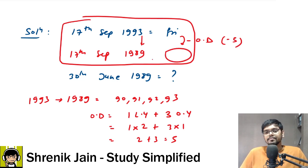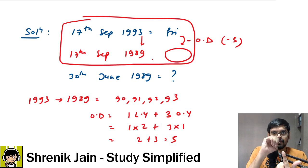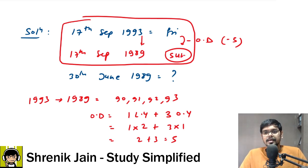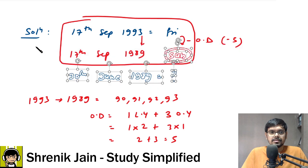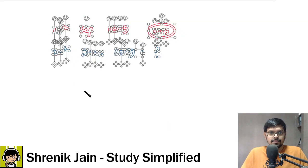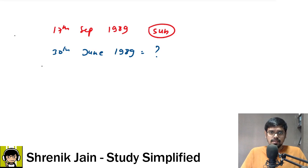Since the odd days count is 5, we subtract 5 going backward. Starting at Friday and going back five days: Friday, Thursday, Wednesday, Tuesday, Monday — Sunday is what remains. So 17th September 1989 is a Sunday. Now from 17th September 1989 to 30th June 1989 we go backward again using the standard approach.